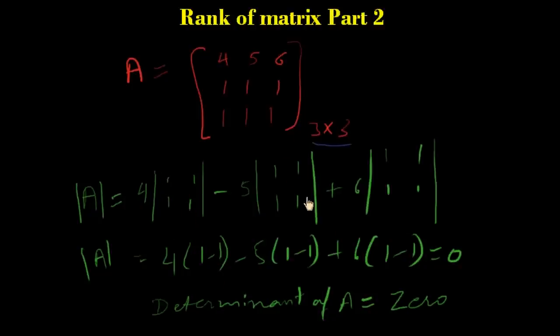One into one minus one into one, one into one, one into one minus one into one, and its determinant is zero. So we cannot show three as rank of matrix of A because its determinant is zero.